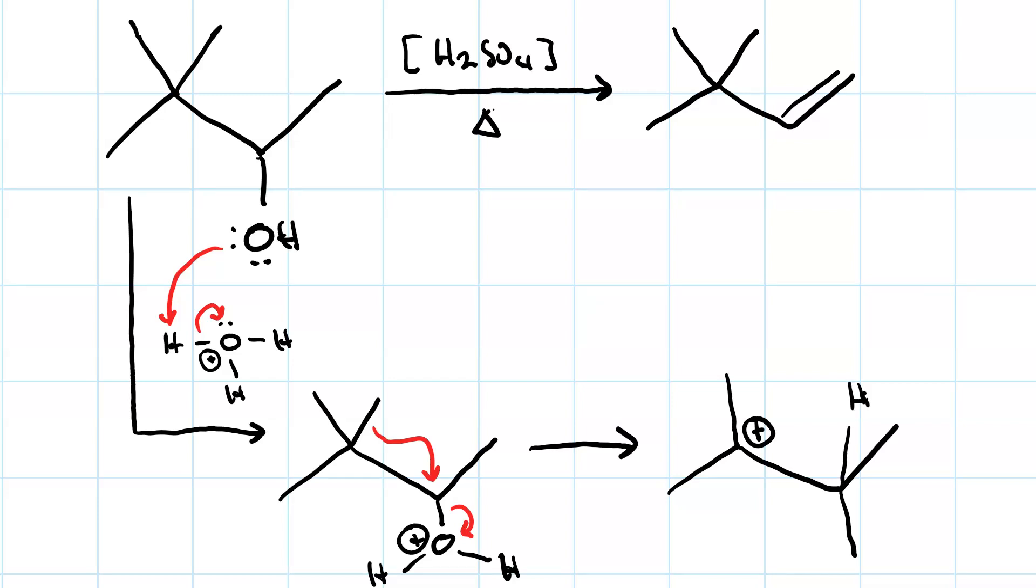Then, water will take the most substituted beta proton. And the alkene we get will be a constitutional isomer of what we thought. But these two are not the same.